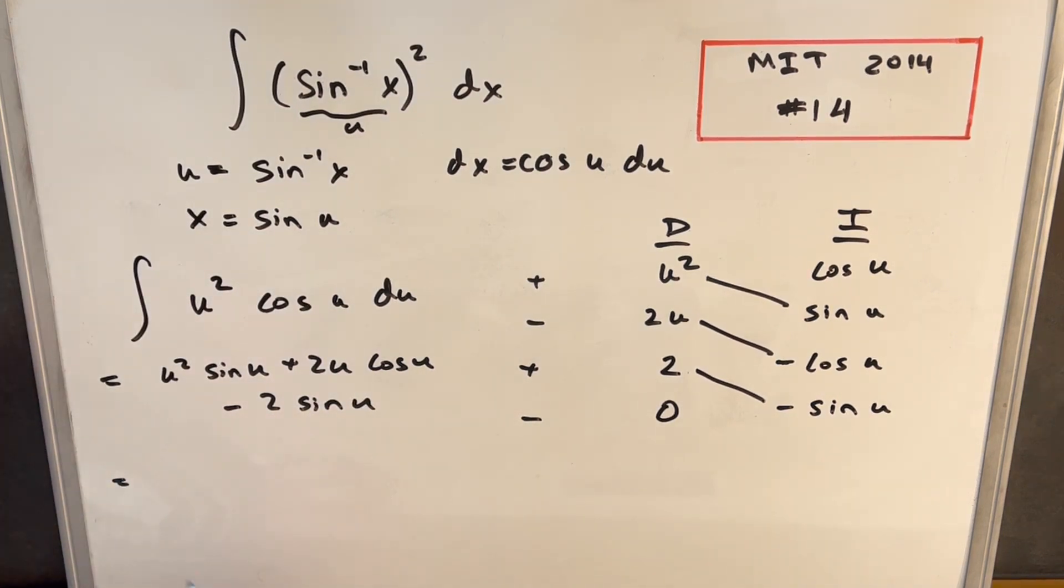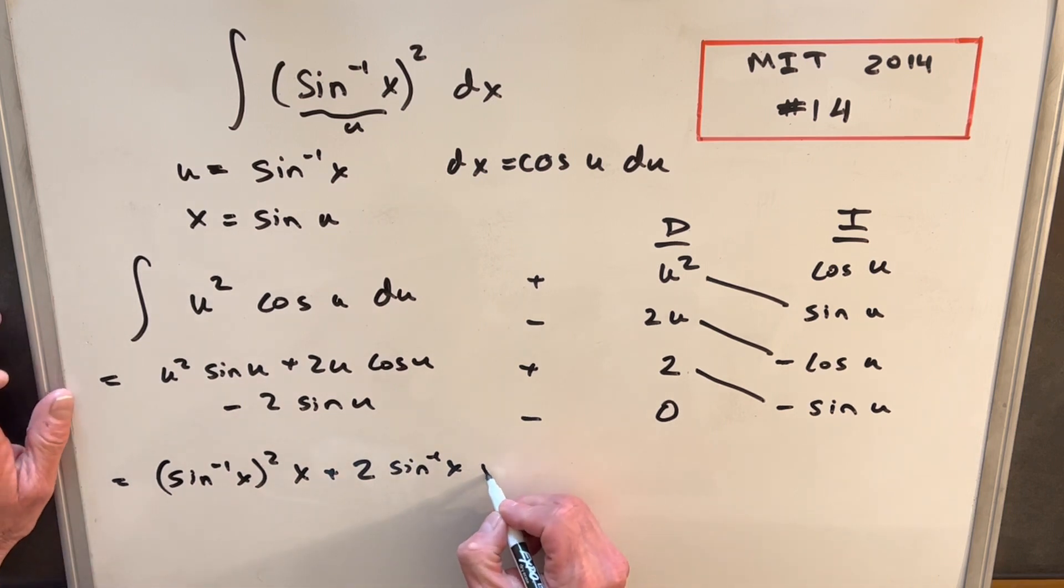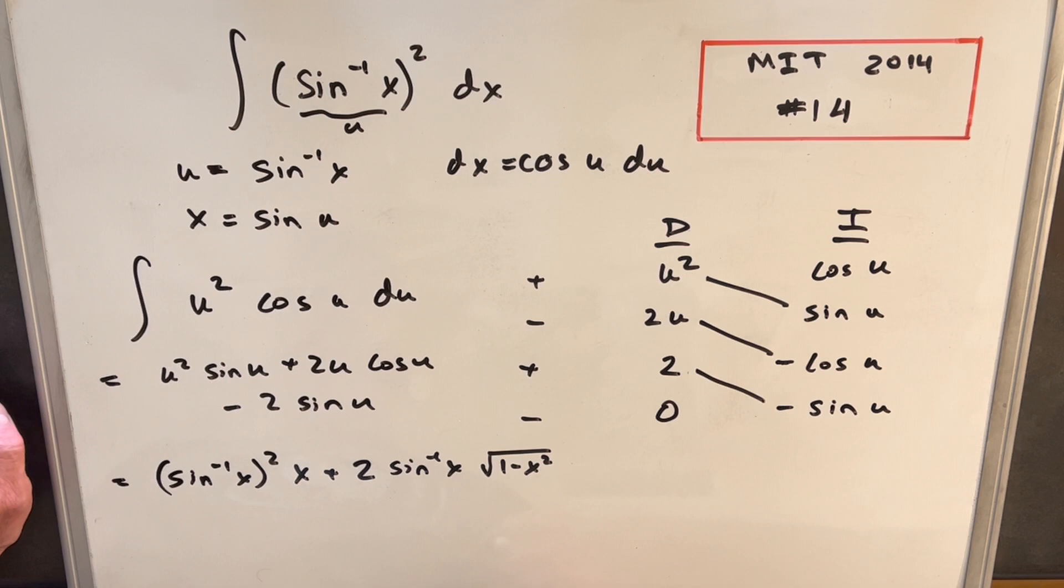And back substitute. For u squared, we have arcsine x squared, and then sine u is just x. Then we have plus 2 arcsine x. And then for cosine u, we found that earlier, that was square root of 1 minus x squared from our triangle. And then we have minus 2 sine u, again it's just x, plus C.